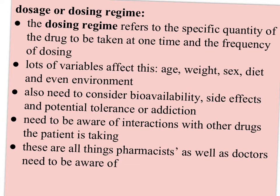So what is the perfect dose for each person? The dosing regime refers to the specific quantity of the drug to be taken at one time and the frequency of that dosing. Lots of variables will affect this: age, weight, gender, diet, even your environment. You also need to consider the bioavailability, the potential side effects, and any potential tolerance or addiction. You need to be aware of interactions with other drugs the patient is taking. These are all things pharmacists as well as doctors need to be aware of and discuss with patients.